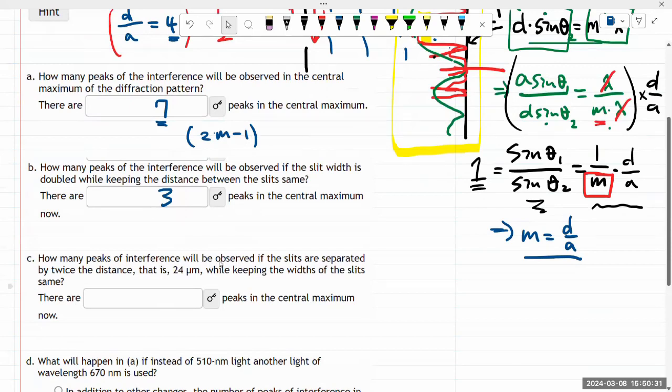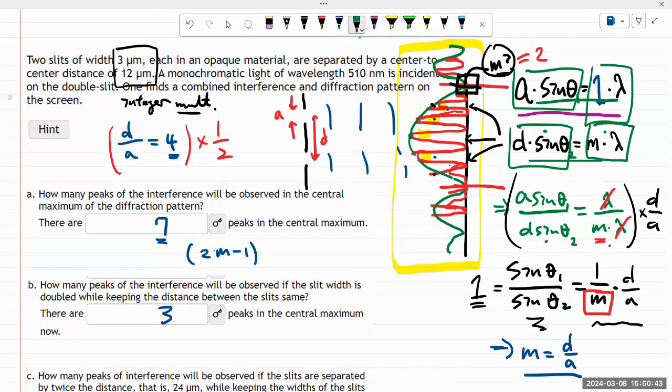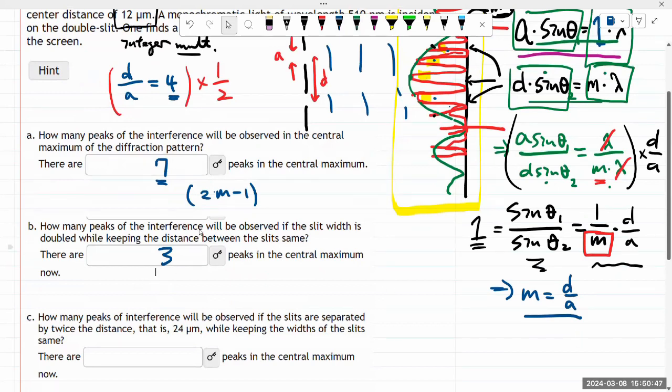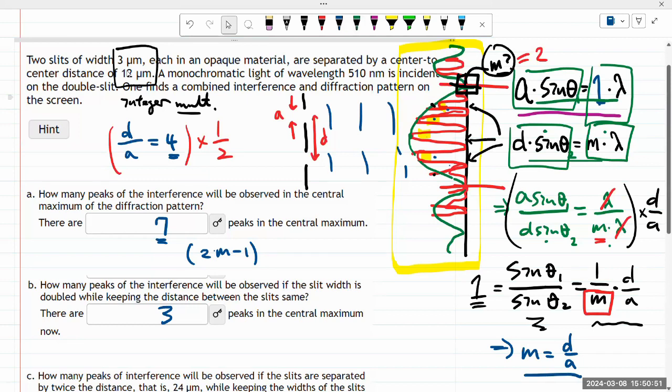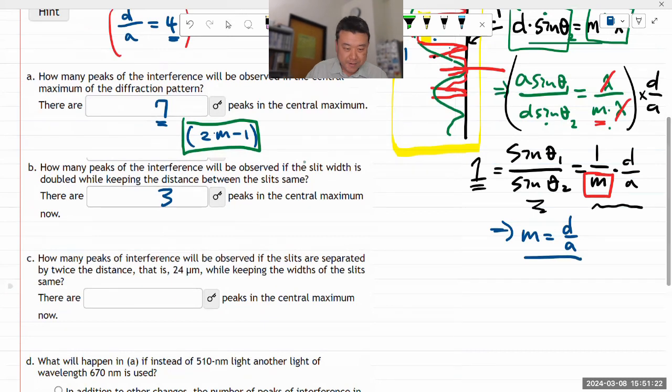Part C asks how many peaks will be observed if the slits are separated by twice the distance while keeping the width of the slits the same. This time we're doing the opposite. Keep the slit as 3 micron and make the center-to-center distance 24. Under that interpretation, instead of multiplying by one half, I'm multiplying by 2. So m becomes not 4 but 8. That's 16 minus 1, so 15. If I used my toes in addition to my fingers I could have counted it, but I'm wearing socks today.